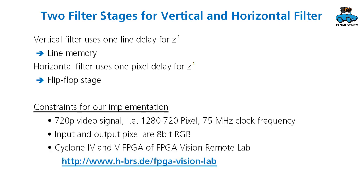Our implementation will be a design for a 720p video signal. These are 1280 by 720 pixels and this gives a clock frequency of about 75 megahertz. Input and output pixels are 8-bit RGB, and this is something that is available in our FPGA Vision Remote Lab with Cyclone 4 and Cyclone 5 FPGA.